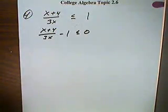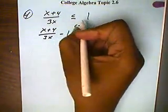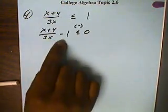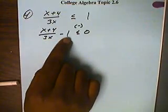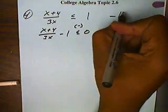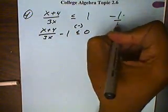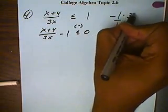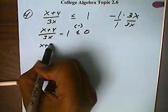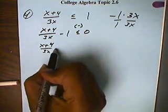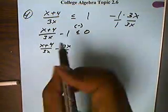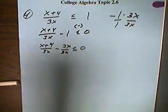So we'll be looking for negative answers. From here, I want this to have the same denominator so we can combine these two terms. So I'm going to take my negative 1, put it over 1, and multiply it with 3x over 3x. That'll give me x plus 4 over 3x minus 3x over 3x, all less than or equal to 0.